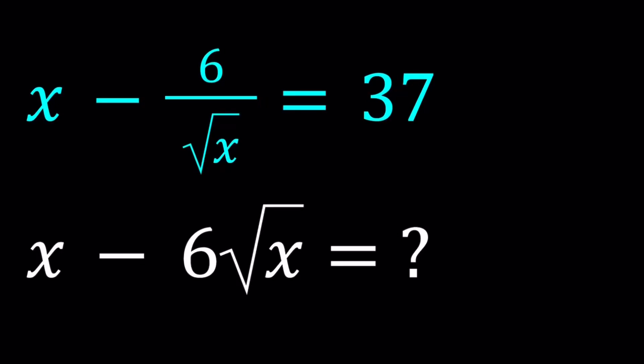Hello everyone. In this video we're going to be dealing with radical expressions. We have x minus 6 divided by square root of x equals 37. And we're supposed to evaluate or find a numerical value for x minus 6 times the square root of x.